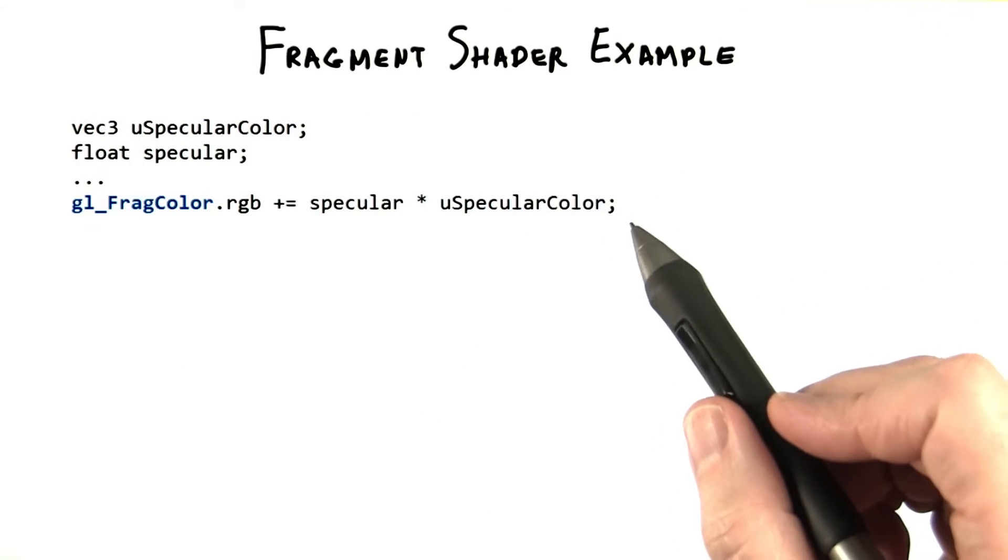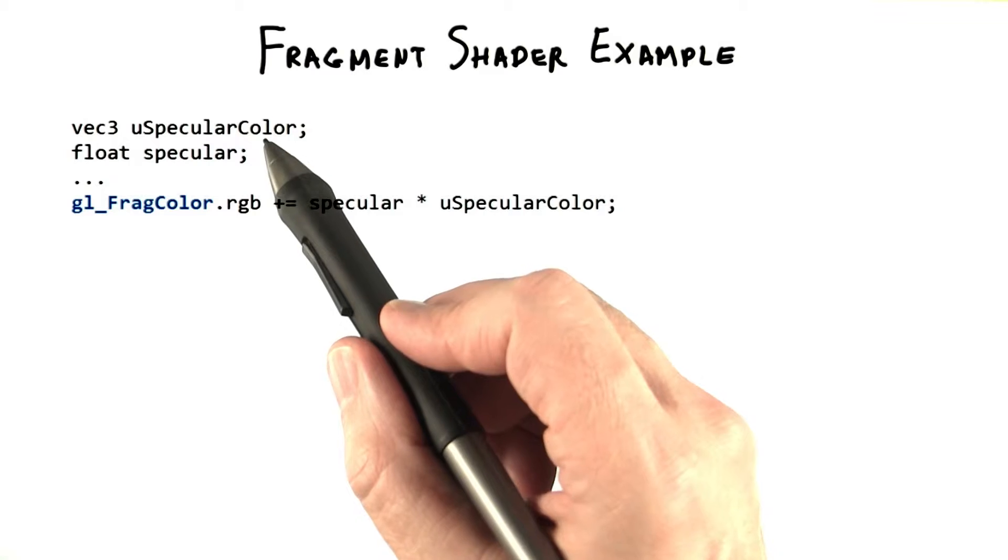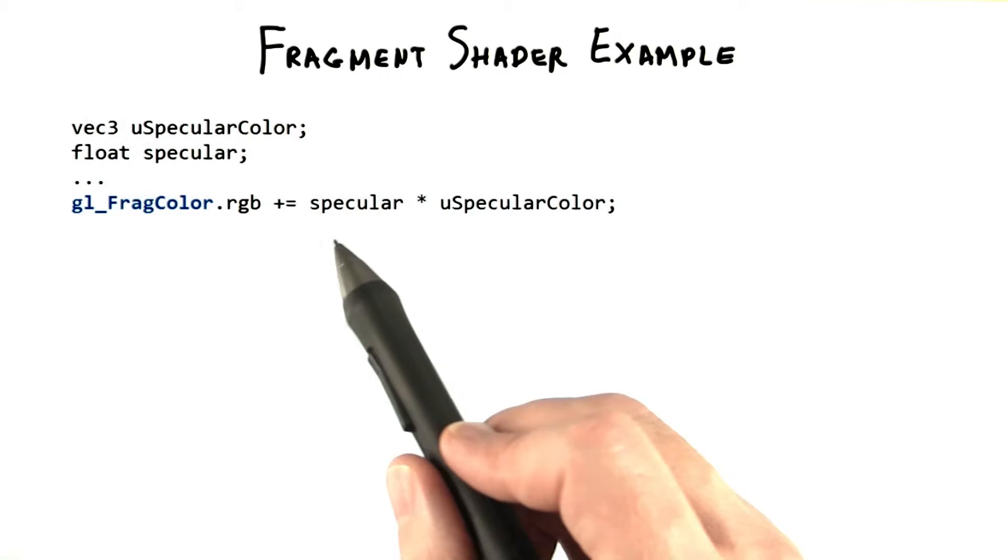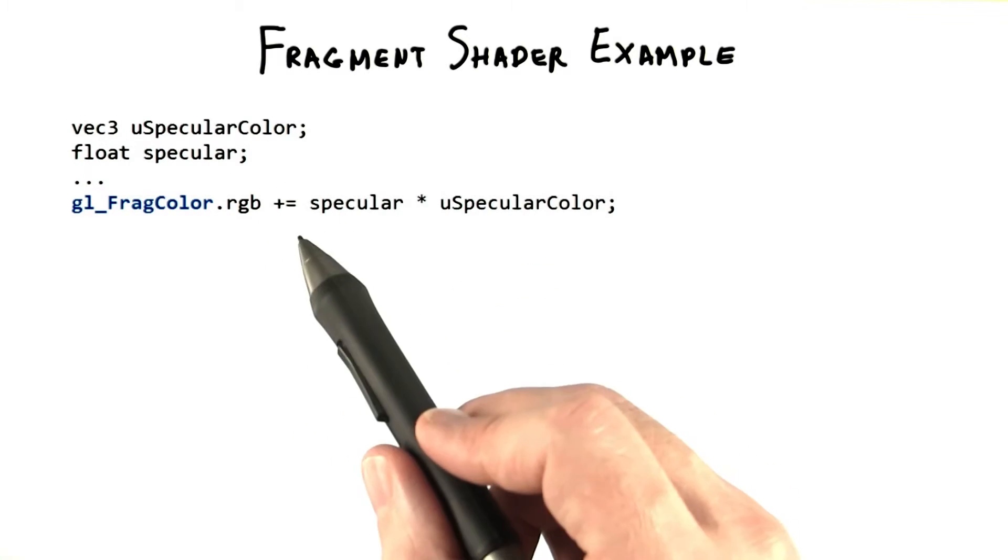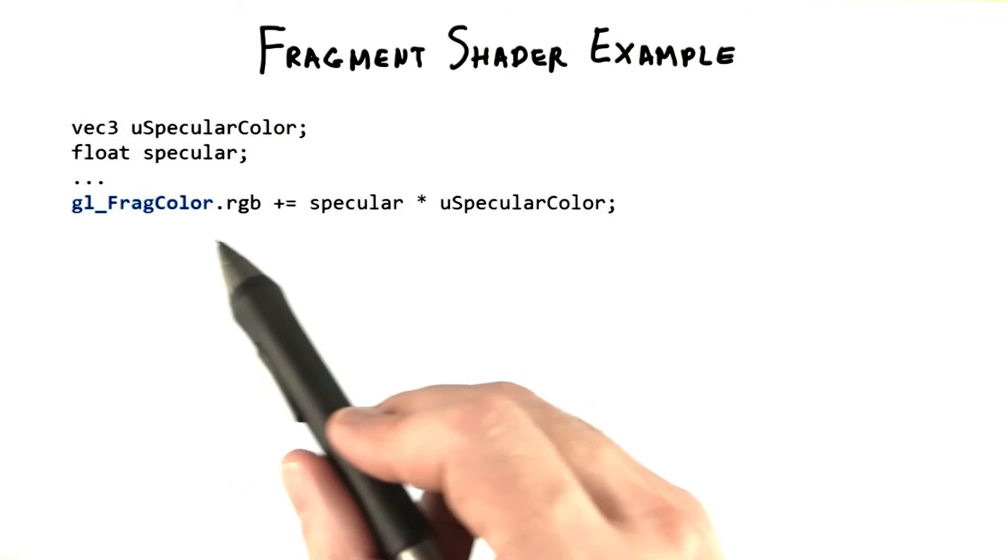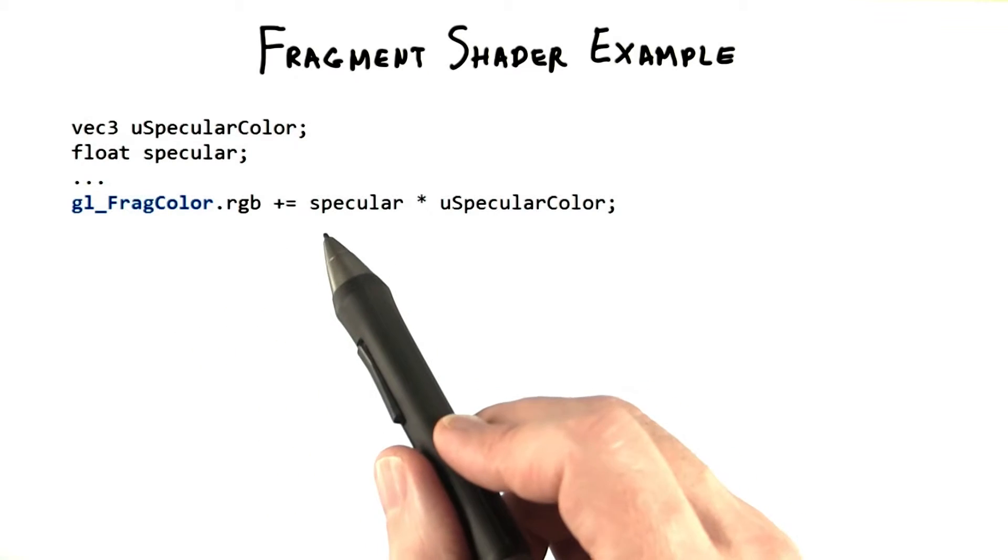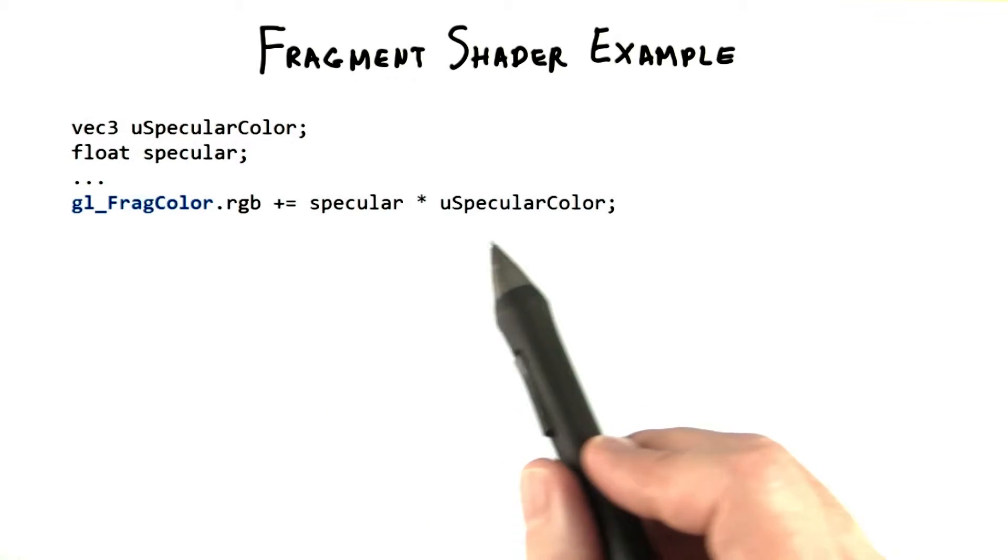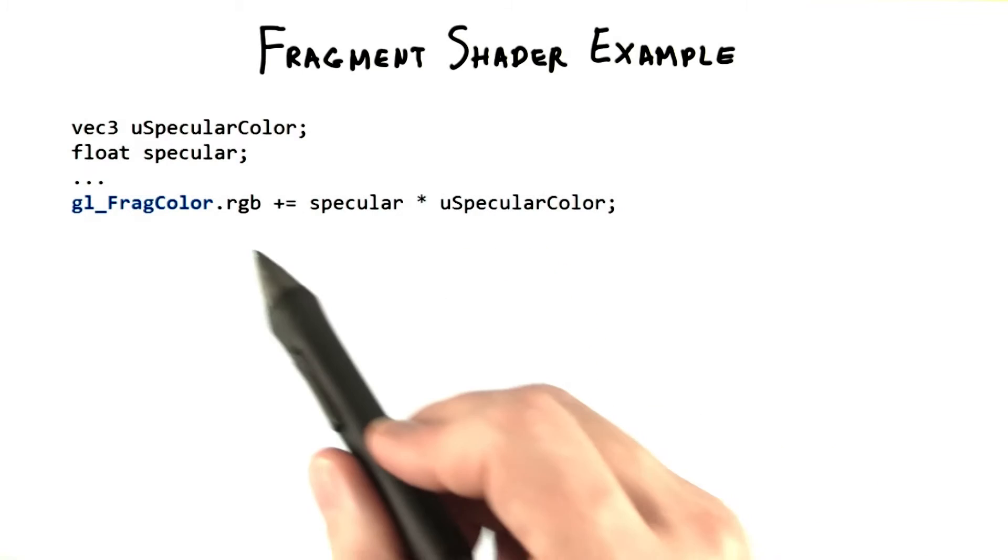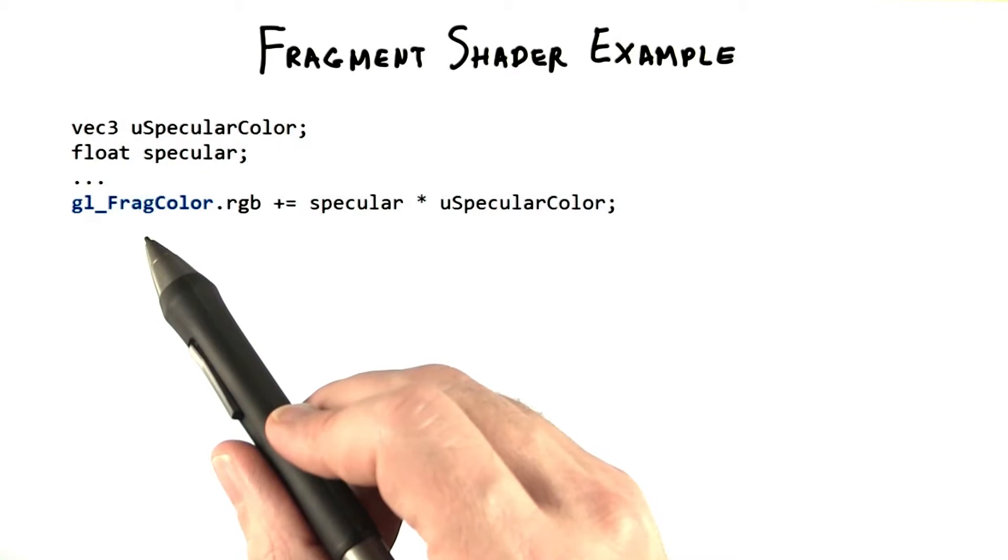Here's another example of vector operations. Say we have an input specular color and a specular amount. We've computed a value for the specular variable, how much it should affect the fragment's color. In this line of code, we multiply this variable, a single floating point number, by a vector with three elements.